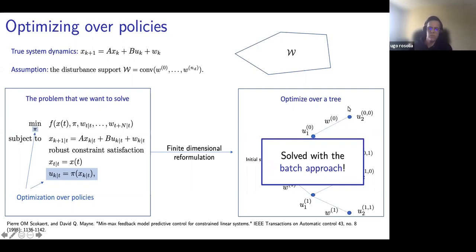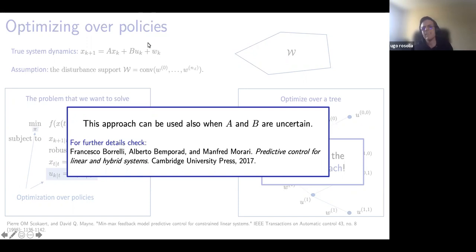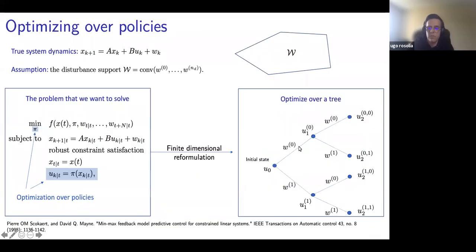Building the tree grows exponentially with horizon length — so it is NP-hard. The good news is that when A and B are uncertain you can still use exactly this approach, though it's computationally intractable. It's nice to know a solution exists, but computing it is hard. The optimization variables are u₀, u₁₀, u₁₁, u₂₀₀ — you solve the entire tree simultaneously, not each node independently.